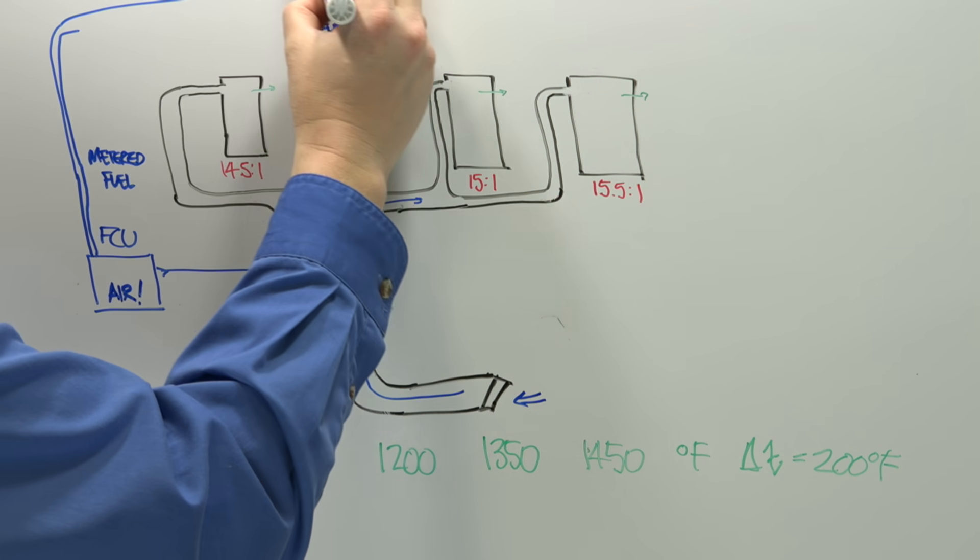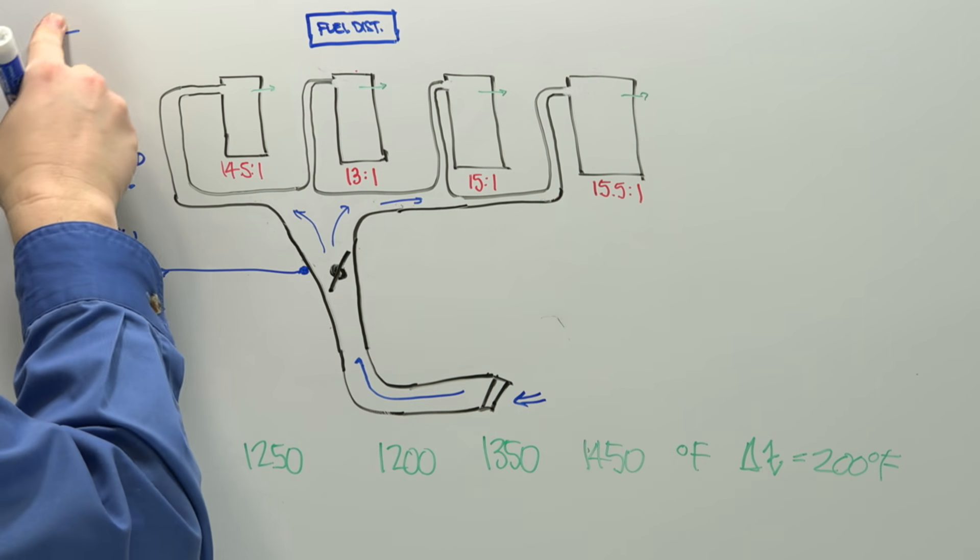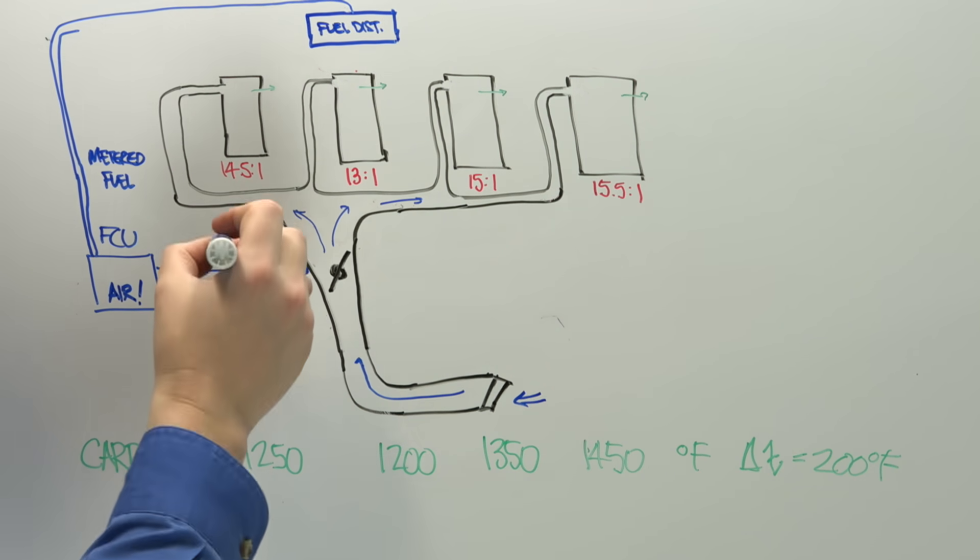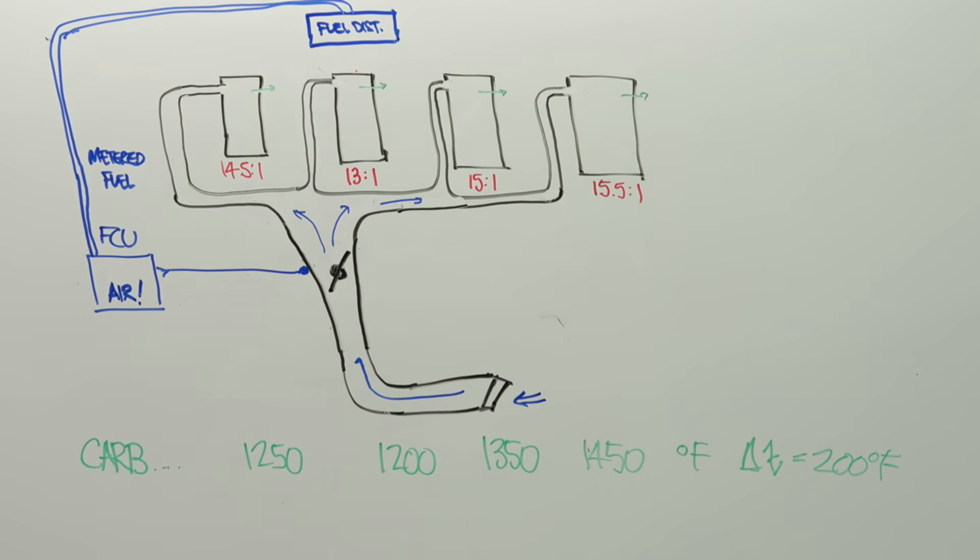So I'll actually draw that line all the way. And I did it again. So what I'll do is I'll just keep it as tight as I can to here. There, that's a little bit better. So here comes all of that metered fuel towards the fuel distributor.